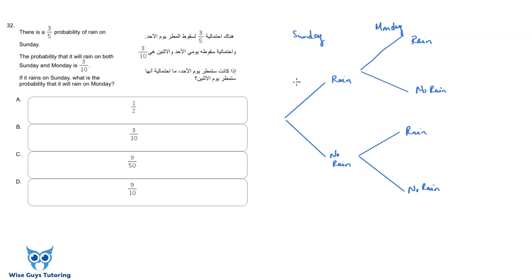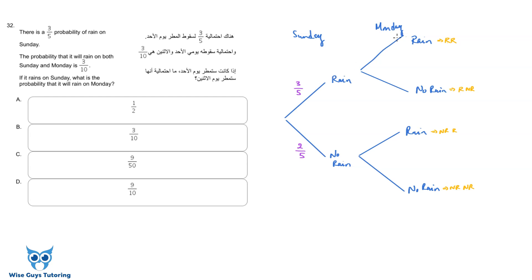The probability of rain on Sunday is 3/5, so the probability of no rain on Sunday is 2/5, since probabilities must add up to 1. The four outcomes along the paths are: rain-rain, rain-no rain, no rain-rain, and no rain-no rain. You calculate the probability of each outcome by multiplying the probabilities along the branch path.